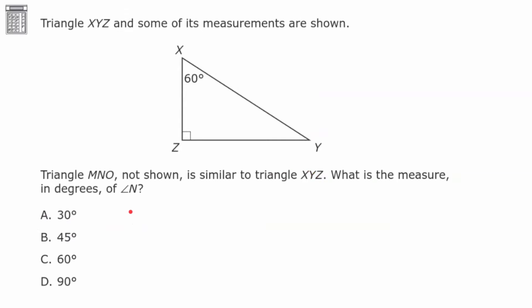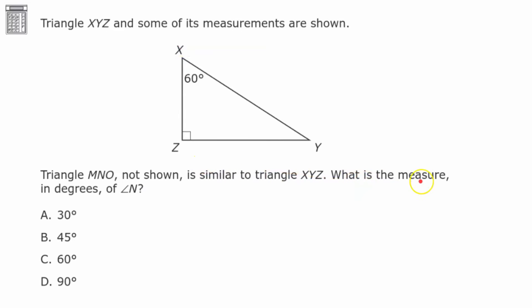Here we have triangle XYZ and some of its measurements are shown. Triangle MNO is not shown, but it is similar to triangle XYZ. What is the measure in degrees of angle N? Go ahead and pause and come back when you're done.